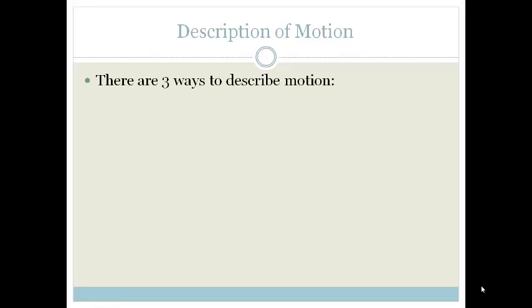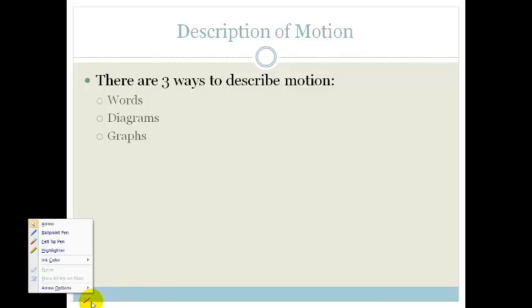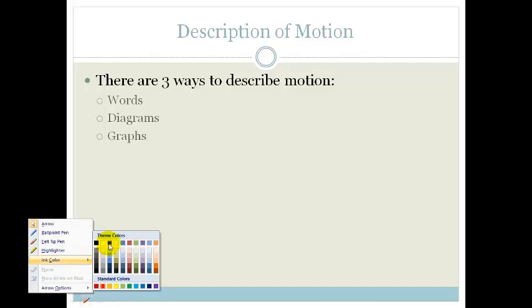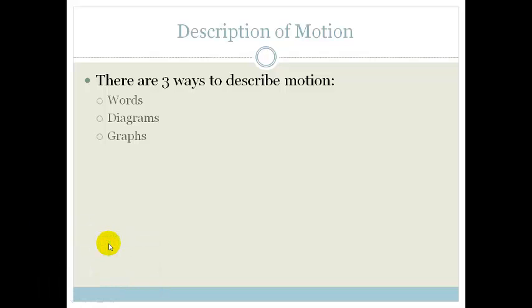In order to describe motion we can do it in three ways. The first is to talk about using words, next is diagrams, and thirdly is graphs. Now with diagrams we usually mean vector diagrams, although we can use pretty little pictures. So you need to be able to do all three.